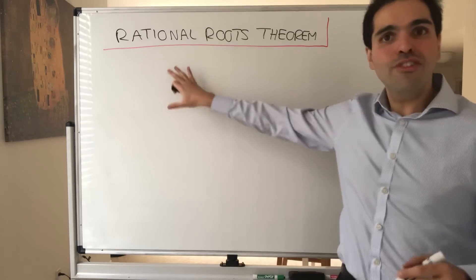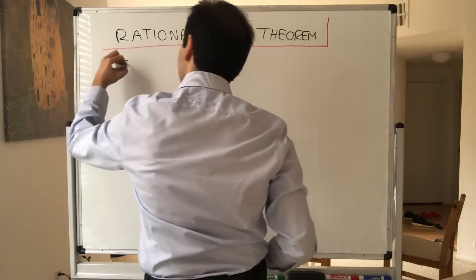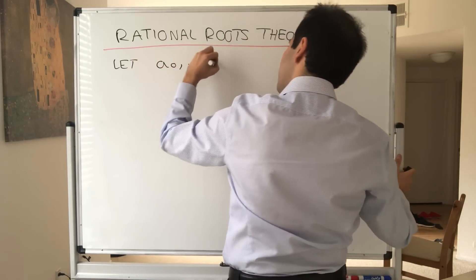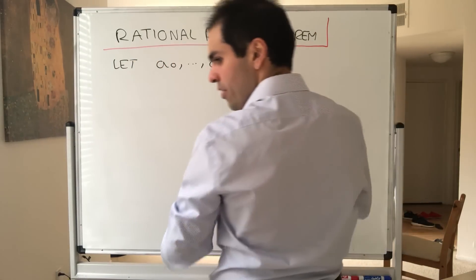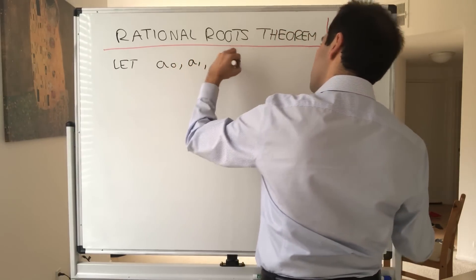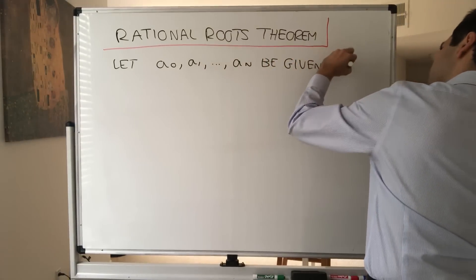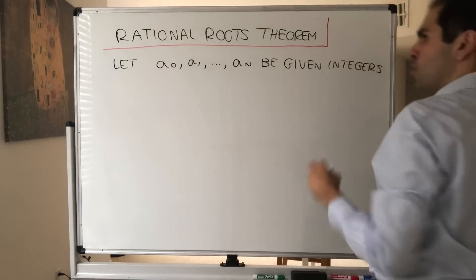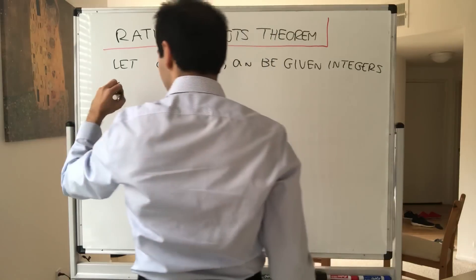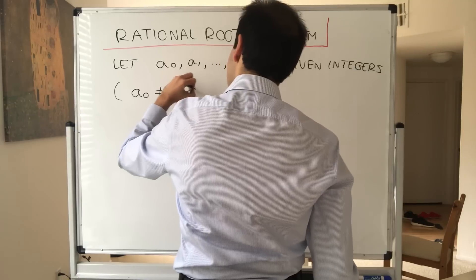So the first part is just the setup. Let's suppose we have given integers a₀, a₁ up to aₙ. Moreover, assume the leading term is non-zero and the ending term, the constant term, is non-zero. So a₀ is non-zero and aₙ is non-zero.